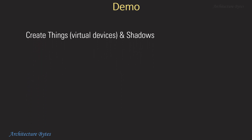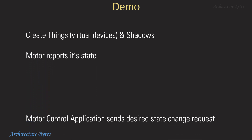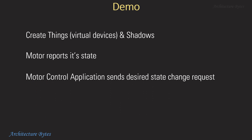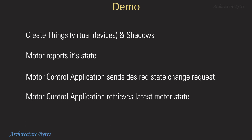The demo will involve creating virtual devices or Things and shadows. Next, the motor IoT device will report its current state. Then, the motor control application will send a desired state change request. Finally, the motor control application will retrieve the latest motor state. We will mimic sending and receiving messages from the motor IoT device using a MQTT test client. So let us begin with creating Things and shadows.